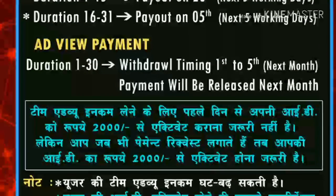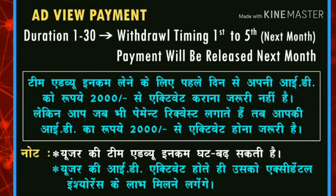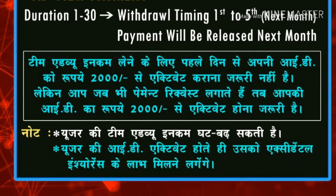For add view payment — how can we request it? From the first direction to the third direction, we will do income withdrawal. Timing is 1 to 5 in the next month, and payment will also be received in the next month. For the team, add view.